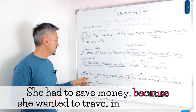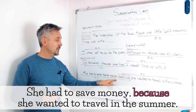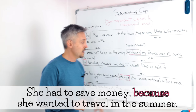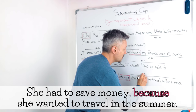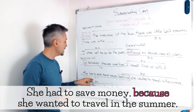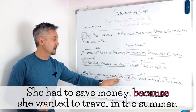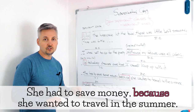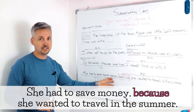The other example was: she had to save some money because she wanted to travel in the summer. 'Because she wanted to travel in the summer' is the dependent clause, and the independent clause is 'she had to save some money' — we don't need another clause to have the whole meaning of the sentence; it can stand by itself.